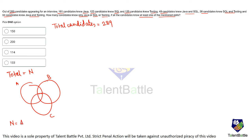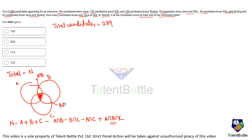The inclusion-exclusion formula is: total = |A| + |B| + |C| minus |A∩B| minus |B∩C| minus |A∩C| plus |A∩B∩C|. Here A∩B∩C is the center region of the Venn diagram, A∩B, B∩C, and A∩C are the pairwise intersections. Applying this to the problem: total candidates are 289.